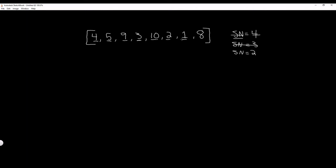Then we go to our next item — is 1 smaller than 2? Yes it is, so we update it again. Smallest number is equal to 1. Then we go to the next item in our list — is 8 smaller than our smallest number? No it's not. Now that we've iterated through each item in our list we are done, so all we have to do is return our smallest number variable which is 1.